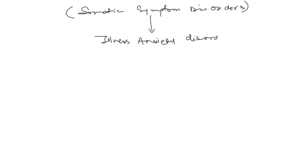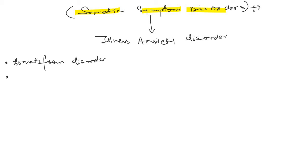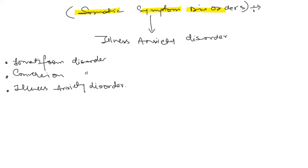What are the other types of somatic symptom disorder? We have somatoform disorder, covered in the first video, and conversion disorder, covered in the second video. Third, we have illness anxiety disorder. There is another name for illness anxiety disorder — it is also called hypochondriasis.